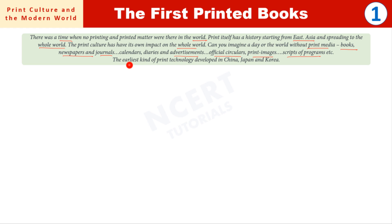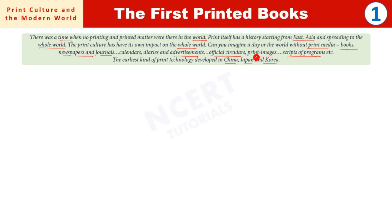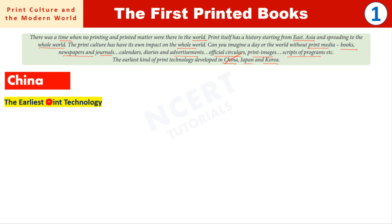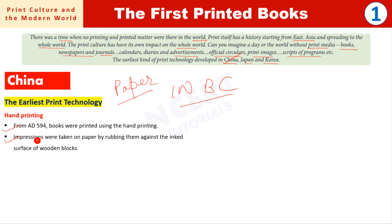The earliest kind of print technology developed in China, Japan, and Korea. So let's start the history of print and begin with China — the earliest print technology. From AD 594, books were printed using hand printing. Printing was done on paper or textile. The history of paper also begins from China.